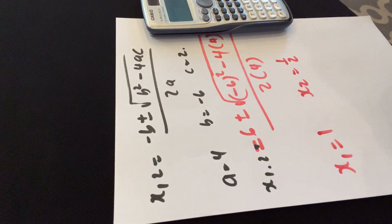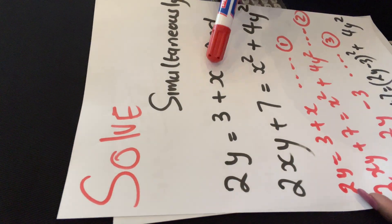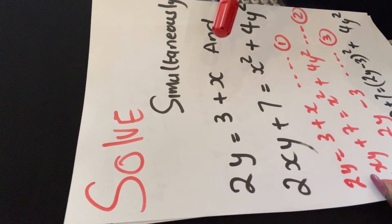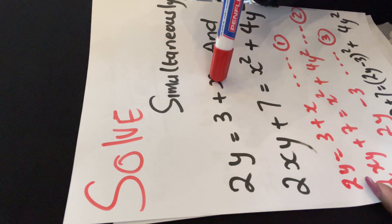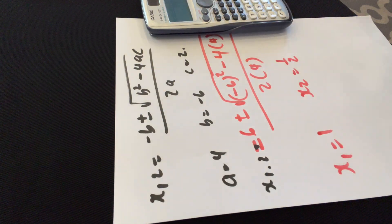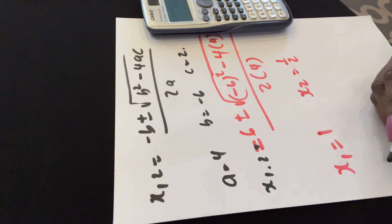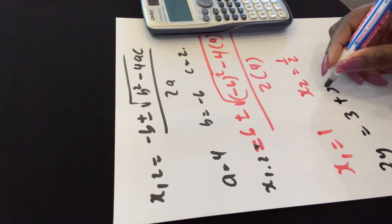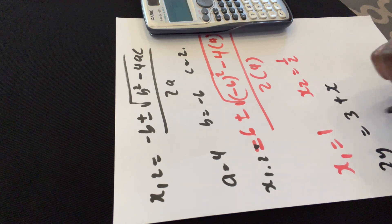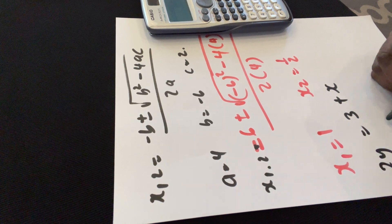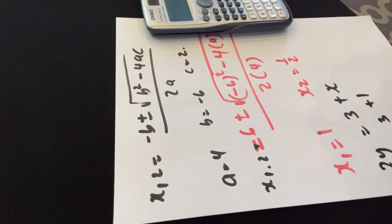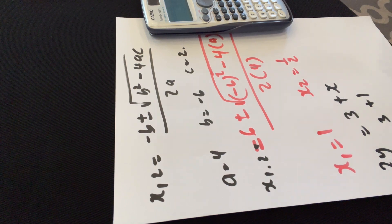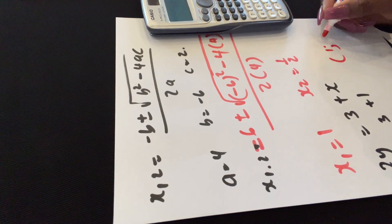Now that I have my values of y, I go back to the first equation, 2y = 3 + x, and substitute each value to find x. Substituting y = 1: 2(1) = 3 + x, so 2 = 3 + x, which gives x = −1. So one solution is (x, y) = (−1, 1).